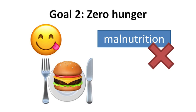The second sustainable development goal is NO HUNGER. It refers to ending hunger and achieving food security for all people by 2030, especially for people that are poor or in vulnerable situations. The goal also aims to end all forms of malnutrition, so people will not have stunted growth because of malnutrition.